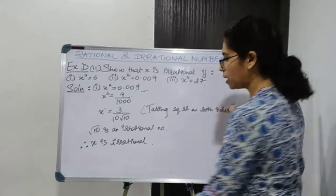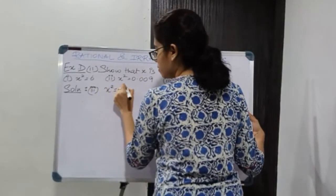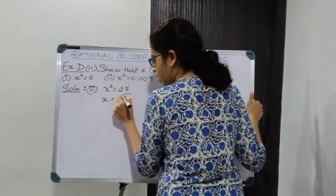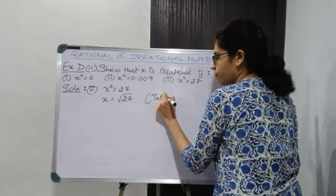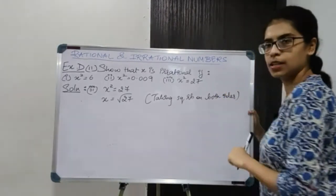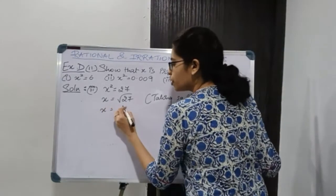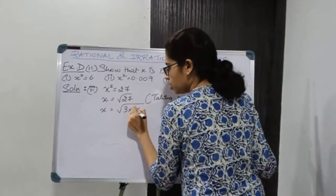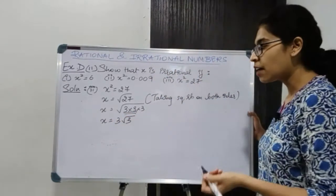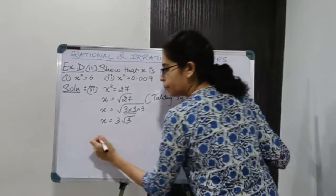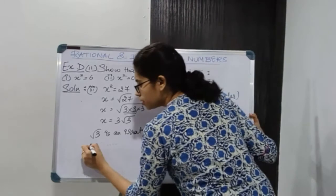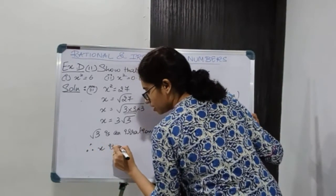Moving on to the third part: x square is 27. So x is equal to square root of 27, taking square root on both the sides. Now if we factorize 27, we get 3 × 3 × 3. Making a group of 2, we get 3 root 3. We are still having a root, so this is an irrational number. Root 3 is an irrational number, therefore x is irrational.